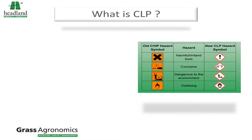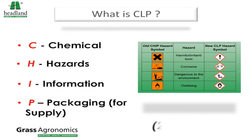CLP replaces the old CHIP system of 2009, which was only European based. CHIP represents the Chemical Hazards and Information Packaging for supply.